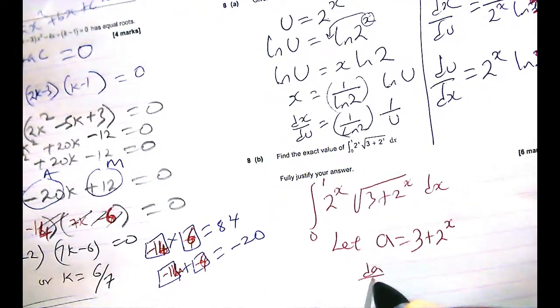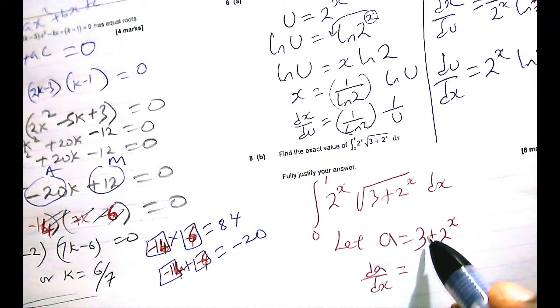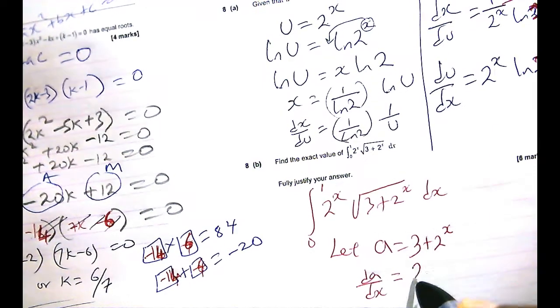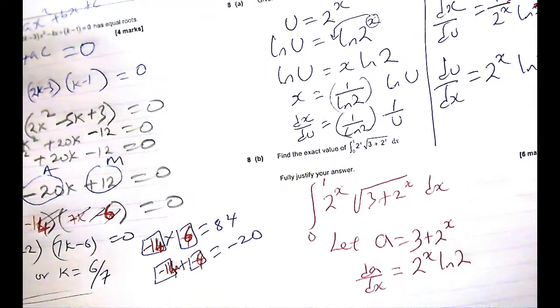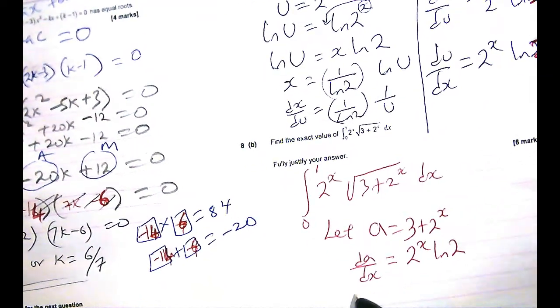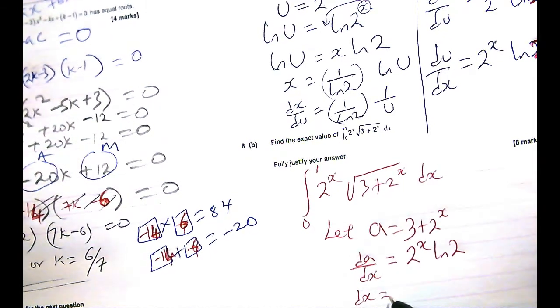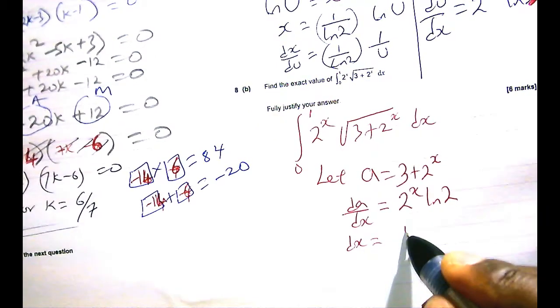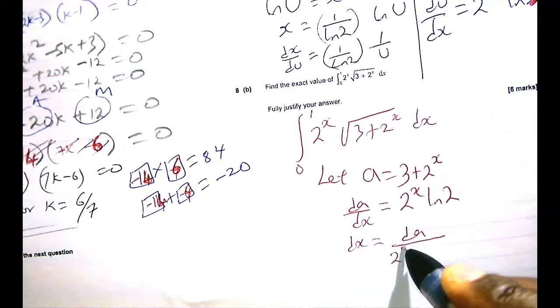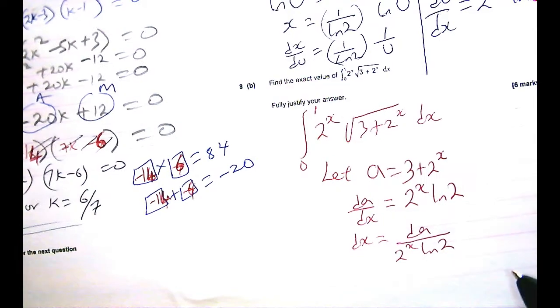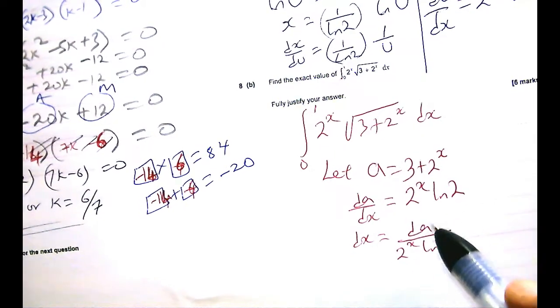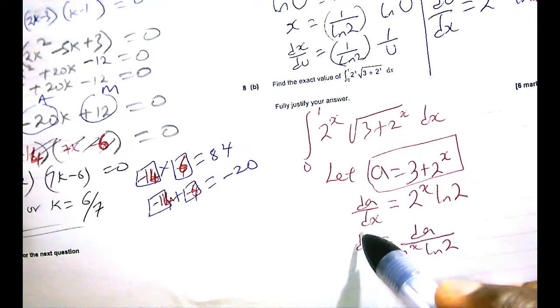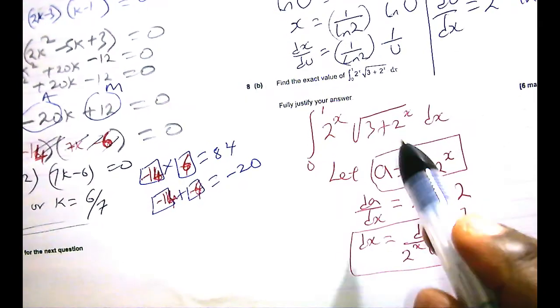Let A equals 3 plus 2 to the x. The A dx would therefore be the derivative of 3, which is 0, plus derivative of 2 to the x, which we already said is 2 to the x lin 2. Now, therefore, your dx is simply, in terms of the A, your dx is going to be da over 2 to the x lin 2.